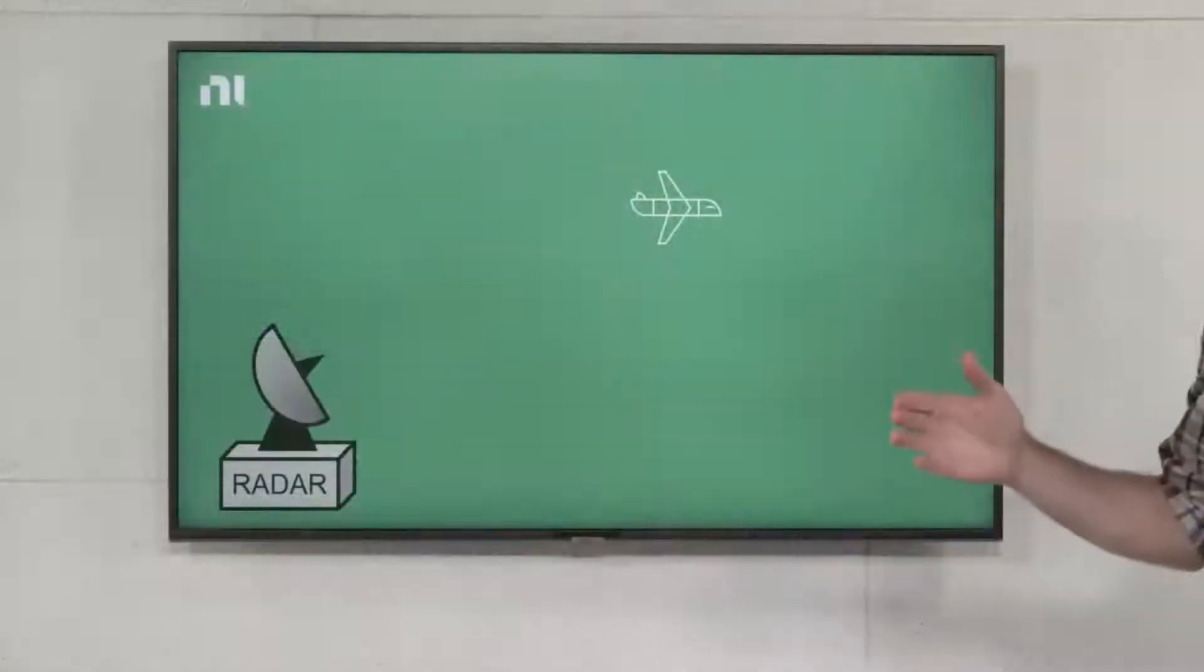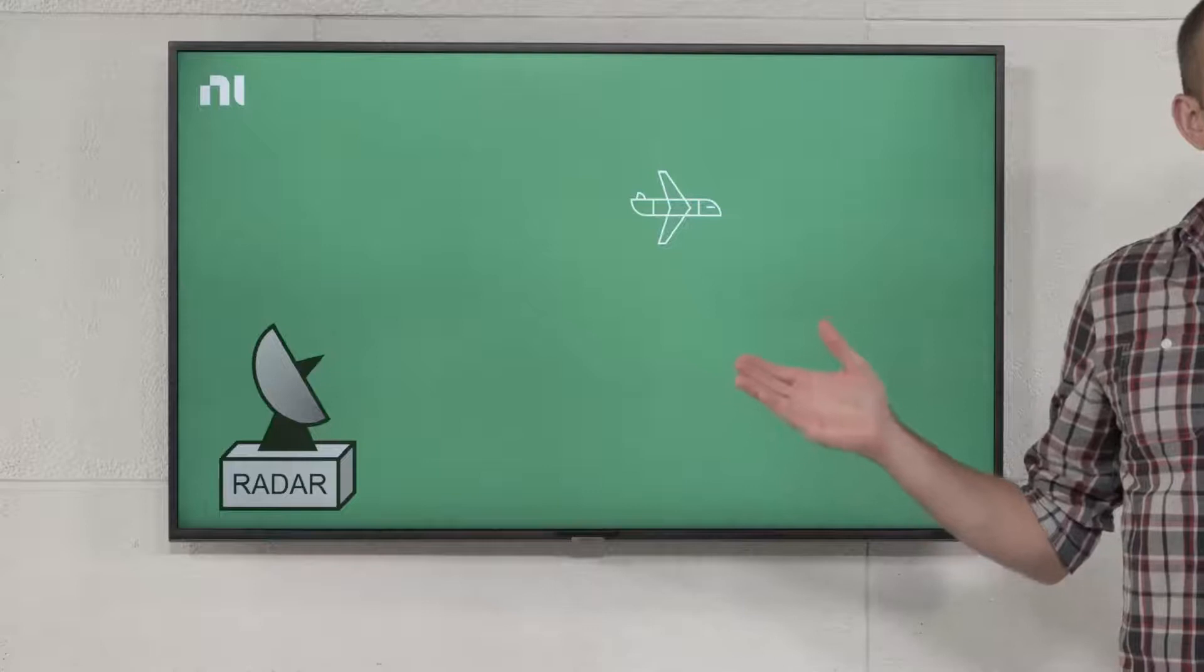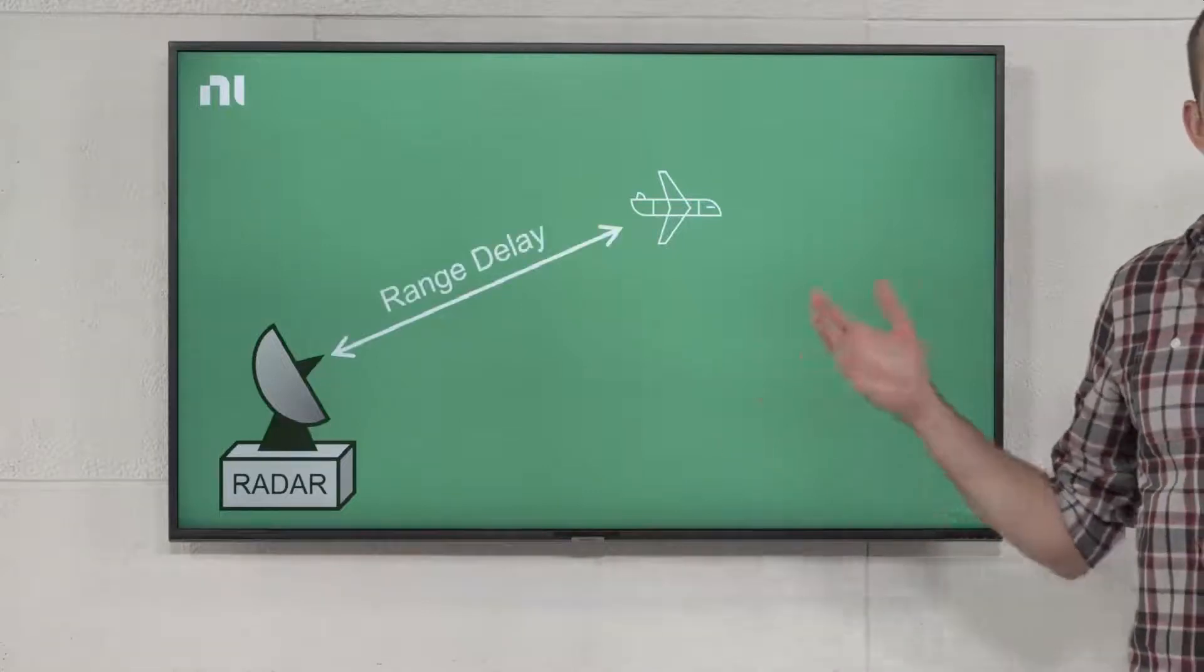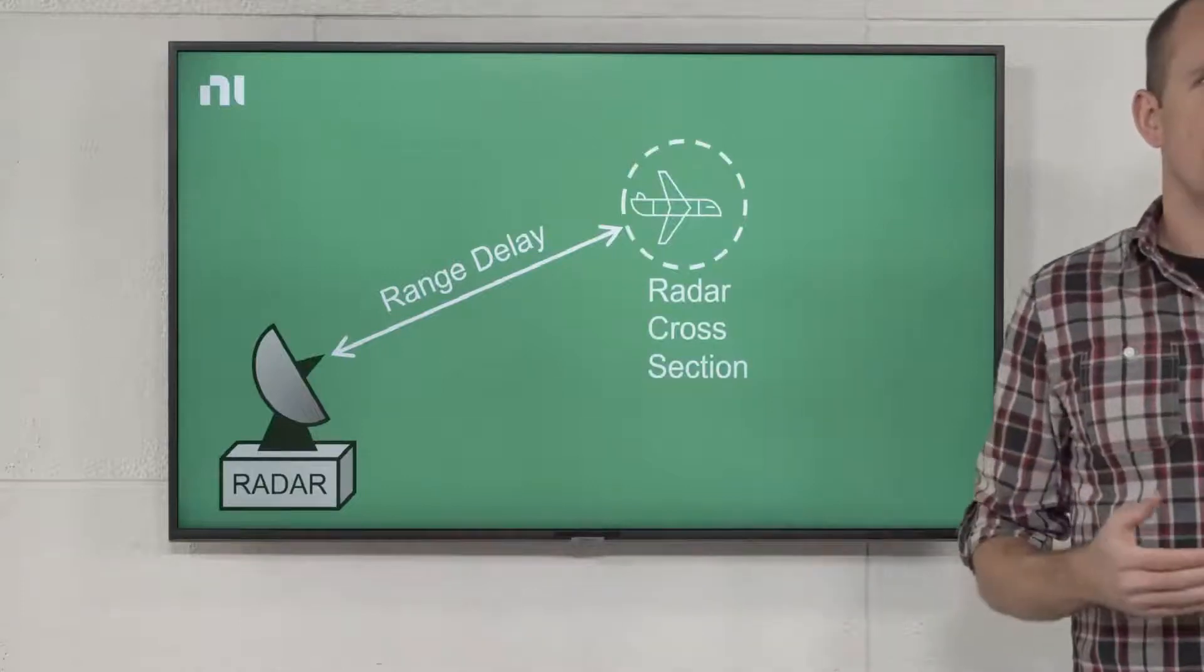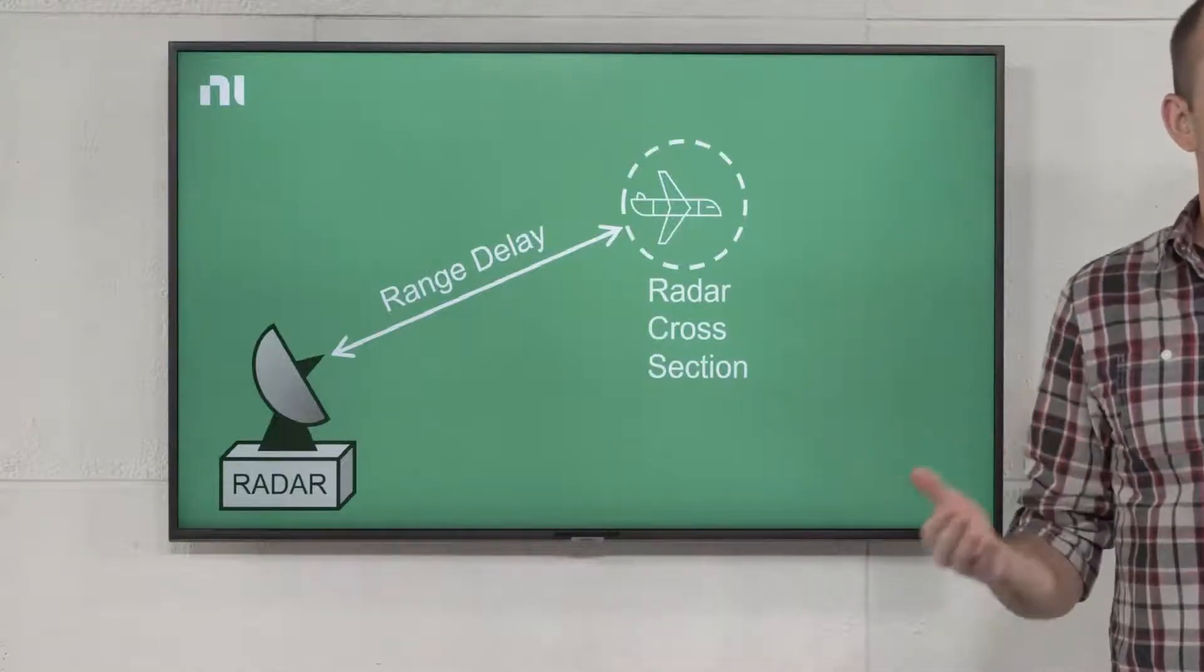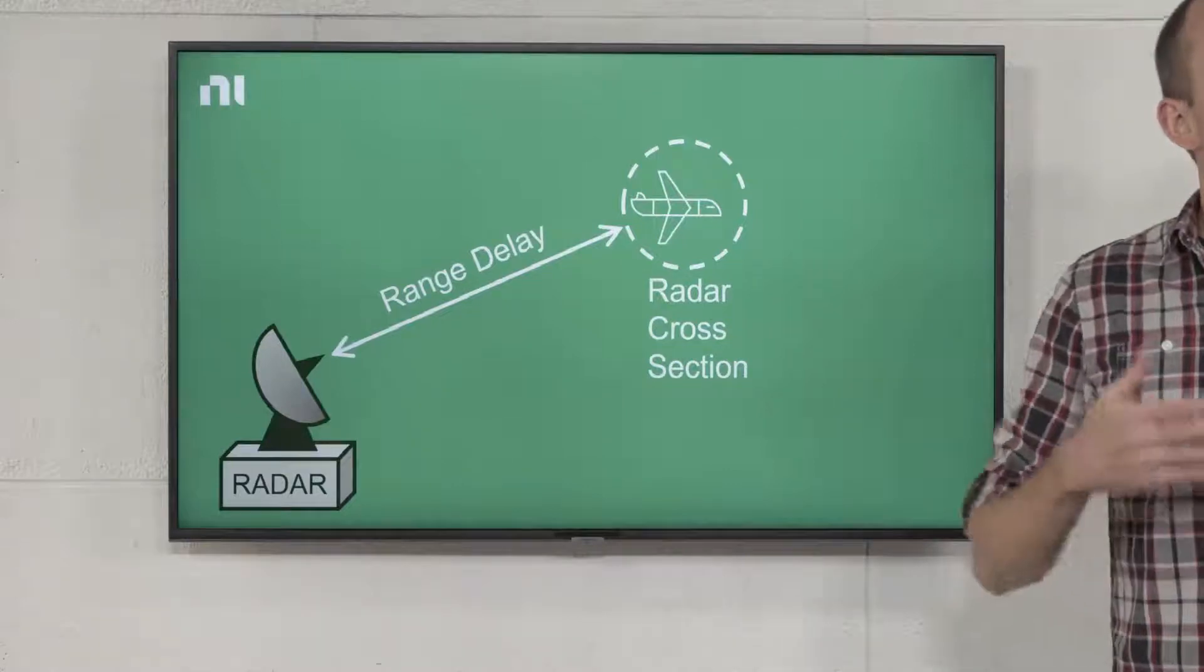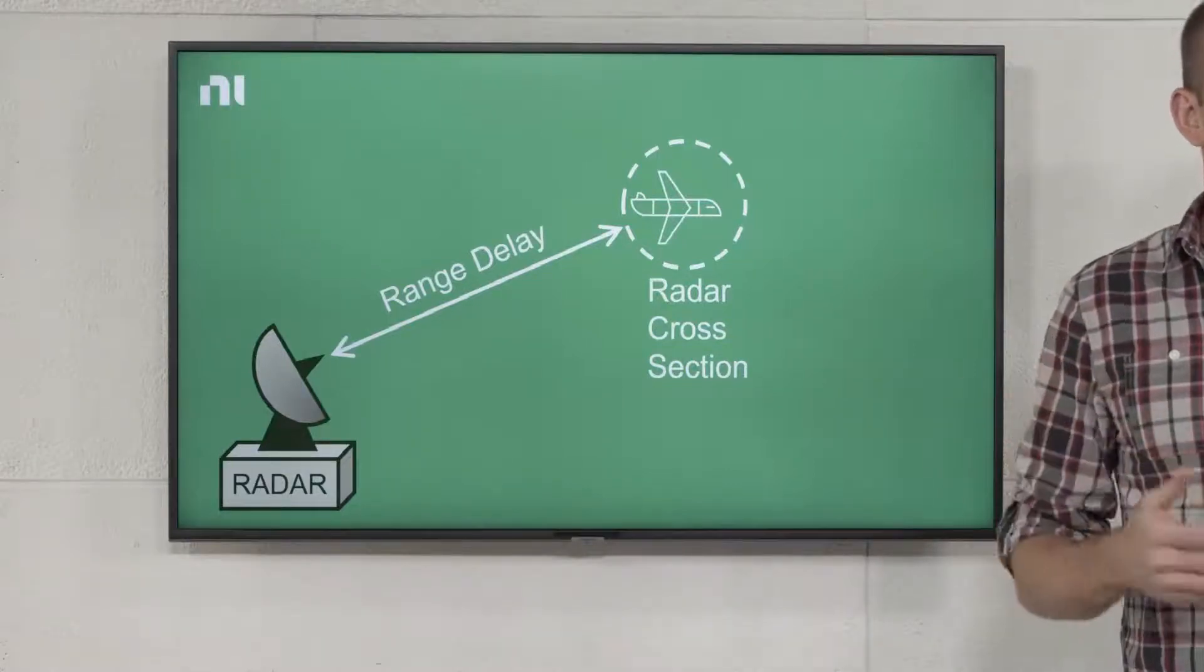So, what kind of processing does the target generator apply to that signal to simulate a radar target? Let's consider the scenario of a surveillance radar trying to detect an aircraft. For one, we'll need to delay the signal that gets sent back to the radar to simulate the range or distance it has to travel to the target. We'll also need to attenuate the signal to account for the radar cross-section of our simulated target, which determines how much energy it reflects back.